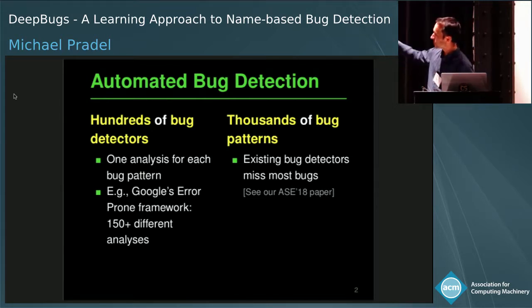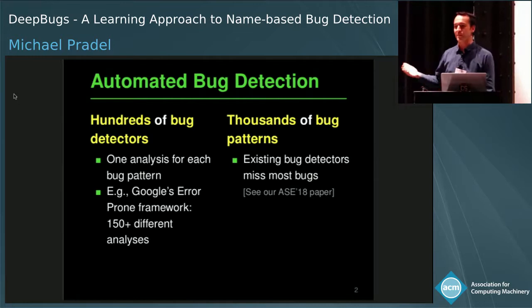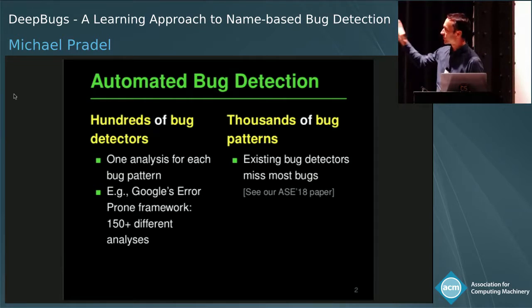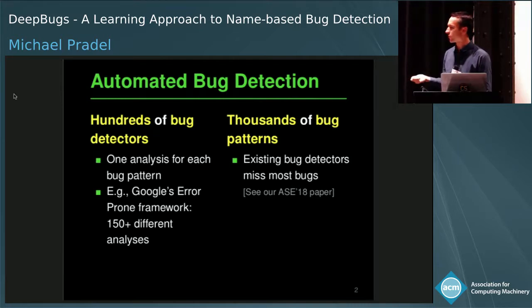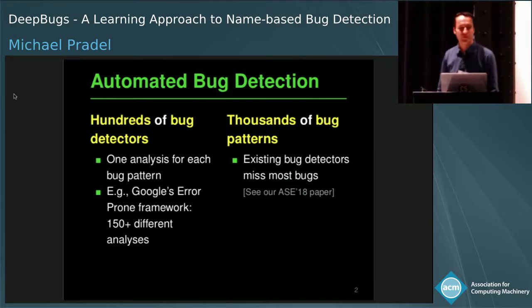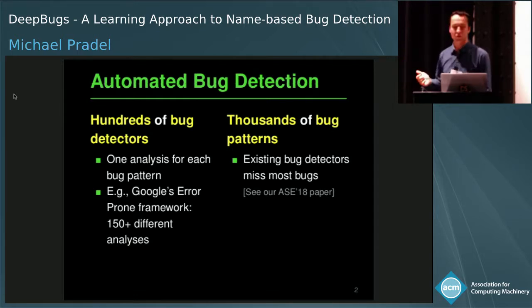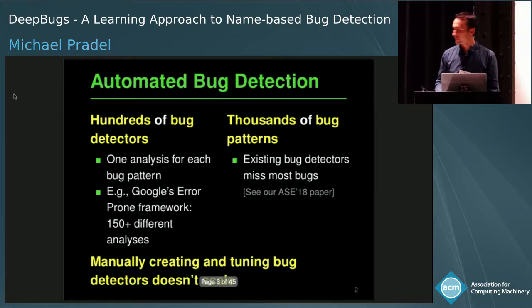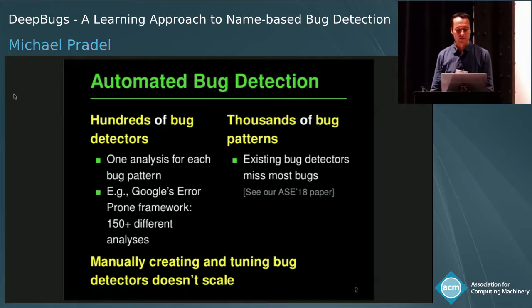The other side of the story is that we have not only hundreds, but thousands, tens of thousands, maybe even more different bug patterns. All the existing bug detectors we have right now unfortunately miss most of the bugs that occur in the wild. We have an OOPSLA paper presented just a few weeks ago with empirical evidence on that. The bottom line is that manually creating and tuning bug detection tools does not really scale to all the different bug patterns that occur in the wild.